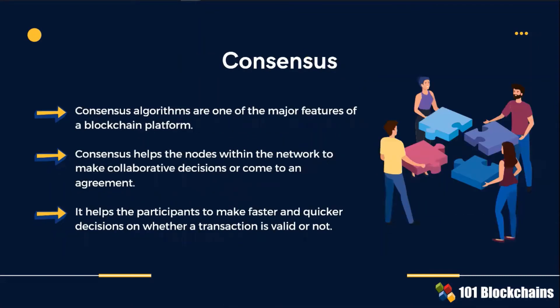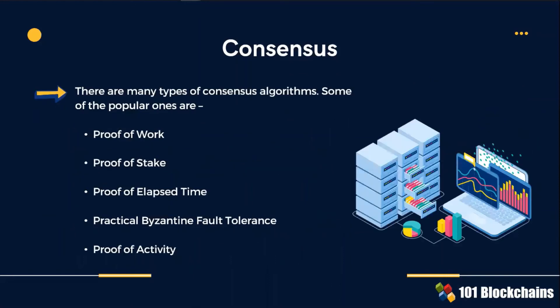Consensus algorithms are, if not the major in absolute, certainly one of the major features of blockchain protocols. Consensus helps the nodes within the network to make collaborative decisions and come to an agreement. The slide shows several mechanisms to reach consensus. Take a few moments to check if you are familiar with all of them.